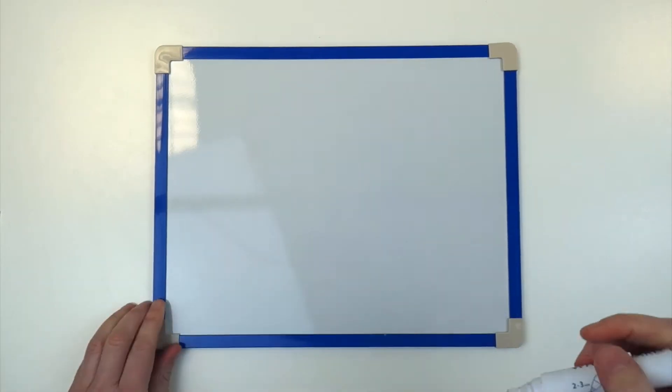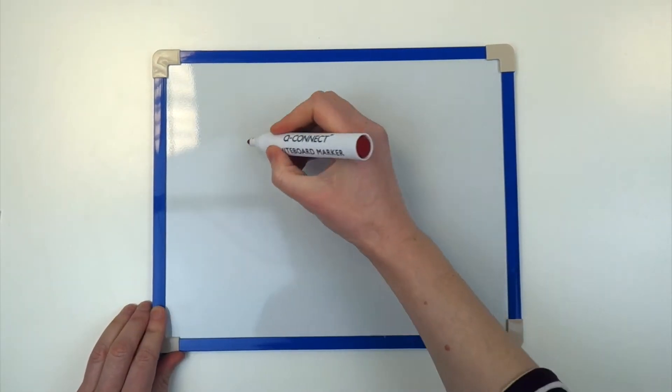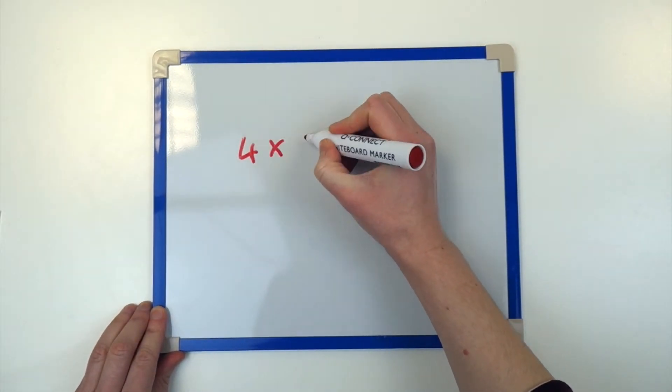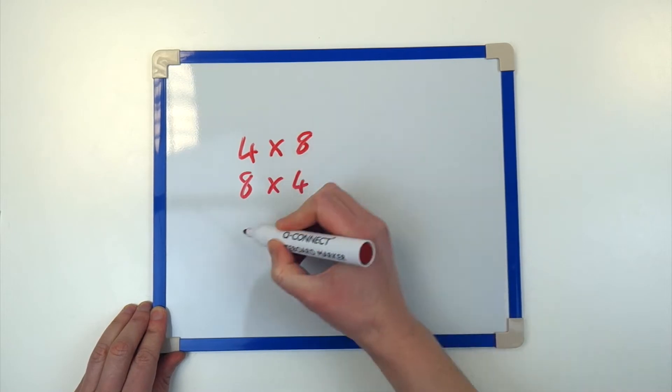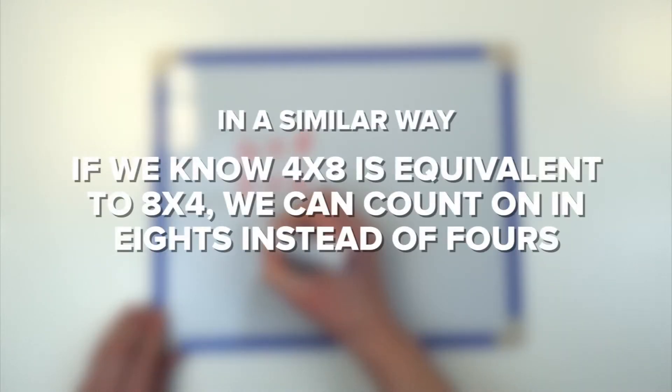In a similar way, if we know that 4 times 8 is equivalent to 8 times 4, we can count on 9 eights instead of 4s, which is faster.